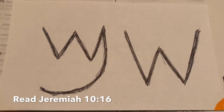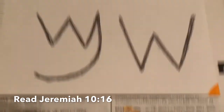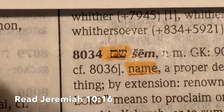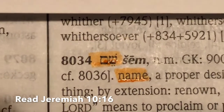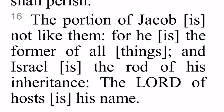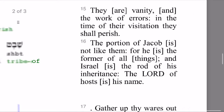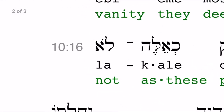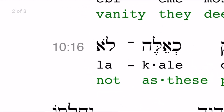Today's Hebrew word is sham. Here's how it's spelled in the Assyrian script. It means 'name.' This is the book of Jeremiah, chapter 10, verse 16: 'The portion of Jacob is not like them, for he is the former of all things, and Israel is the rod of his inheritance. Yahawah of hosts is his name.'